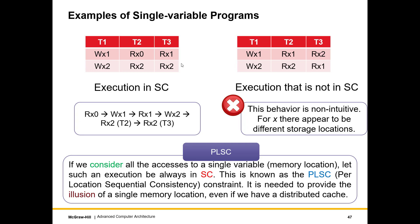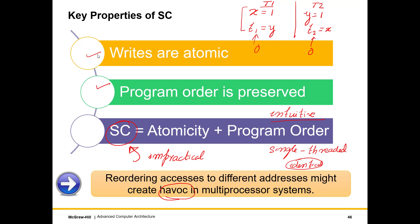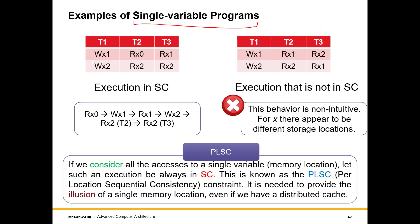Let us look at a few examples to understand this better, starting with single-variable programs. In single-variable programs, we will not have reordering issues from different variables. Consider this example: write 1, then write 2 to x. Thread 1 reads 0 first, thread 2 reads 1, thread 3 reads 1 first and then 2. This execution is in SC. We can order them sequentially: Rx0, Wx1, Rx1, Wx2, then Rx2 of thread 2, Rx2 of thread 3. This is a legal ordering, an equivalent ordering, and we have not compromised on program order.